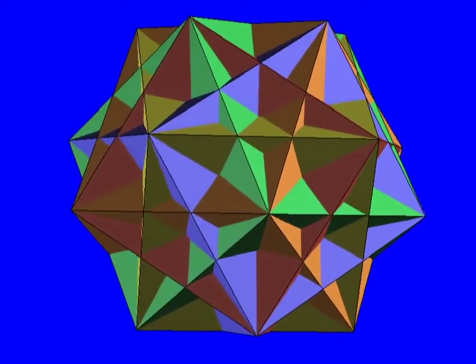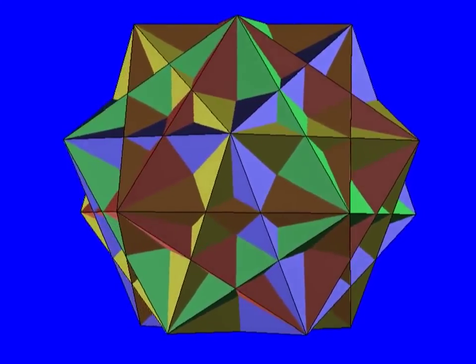By rotating the dodecahedron about a five-fold axis, we find five such cubes. Here each is shown as a different color.